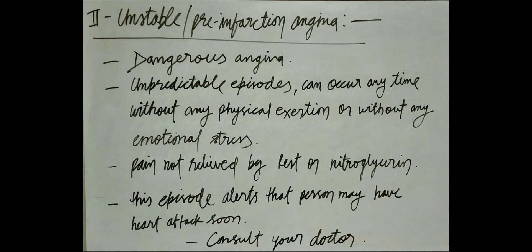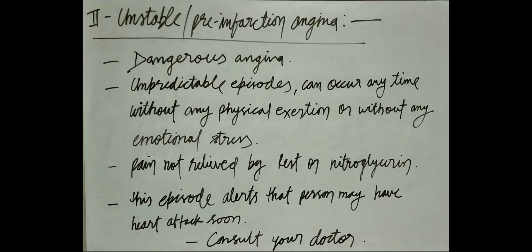Unstable Angina is the second type of Angina. It is also known as Pre-infarction Angina. It is the most dangerous type of Angina Pectoris. In this type, a person can have chest pain or discomfort at any time. It can happen without physical exertion or without any emotional stress. In this type, pain is not relieved by rest or nitroglycerin. This type of Angina alerts a person that they may have a heart attack soon.